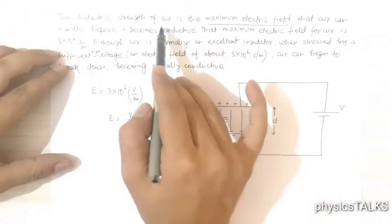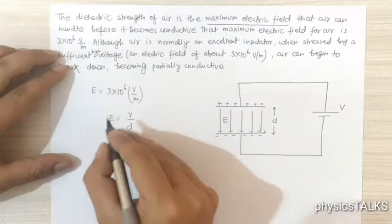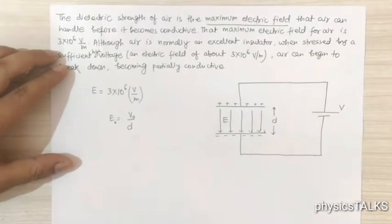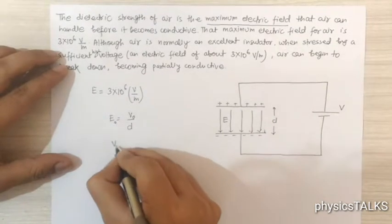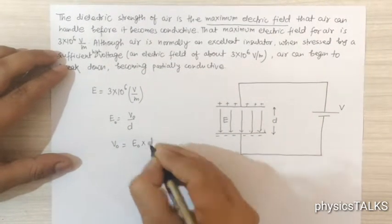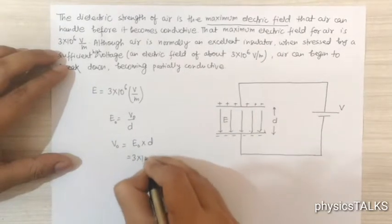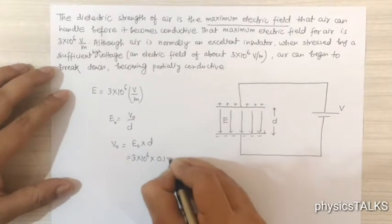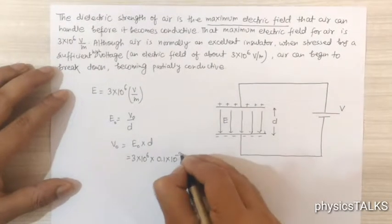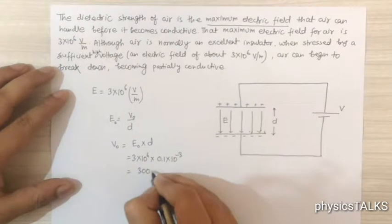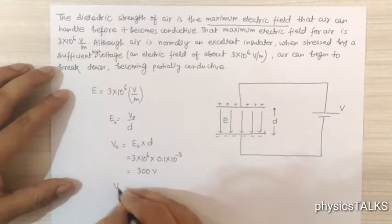The dielectric strength of air is the maximum electric field, so maximum electric field means maximum voltage. Here is the maximum voltage: V0 = E0 × d. E0 is 3×10^6 and d given is 0.1 mm, means 0.1×10^-3 meter. It will be equal to 300 volt. The question asks for RMS voltage.